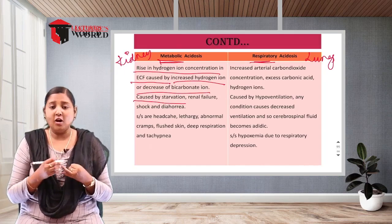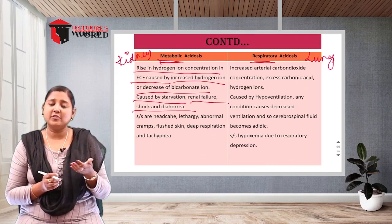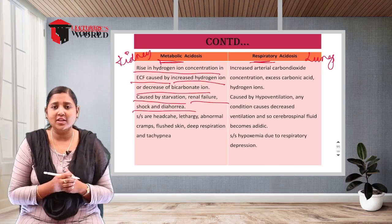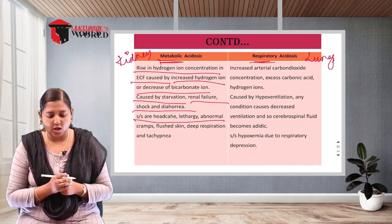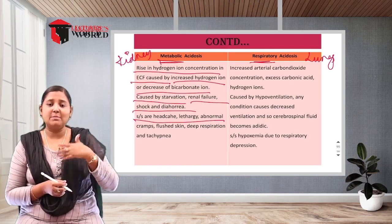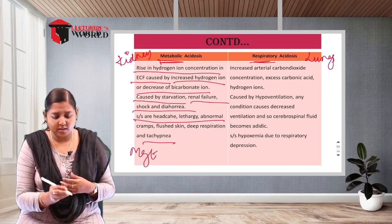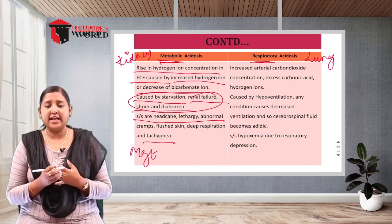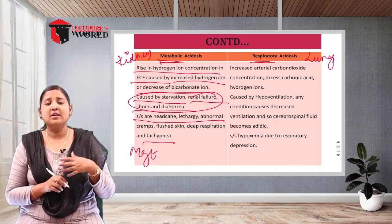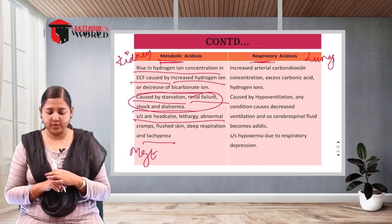Causes of metabolic acidosis include starvation, renal failure, shock, and diarrhea — conditions where acid levels increase and base decreases, lowering blood pH. Signs and symptoms include headache, lethargy, abnormal cramps, flushed skin, deep respiration, and tachypnea (increased respiratory rate). Management involves treating the underlying cause such as kidney failure or diarrhea and restoring proper fluid volume.